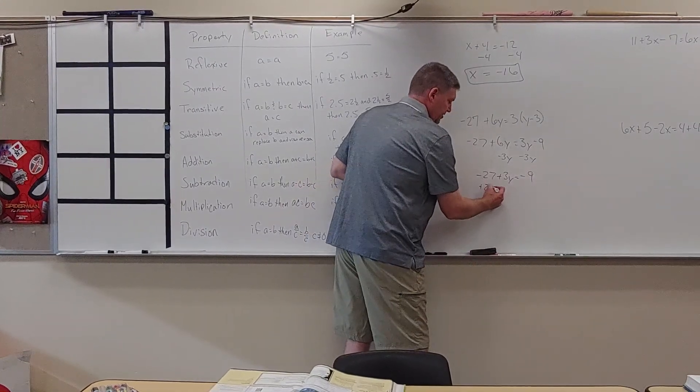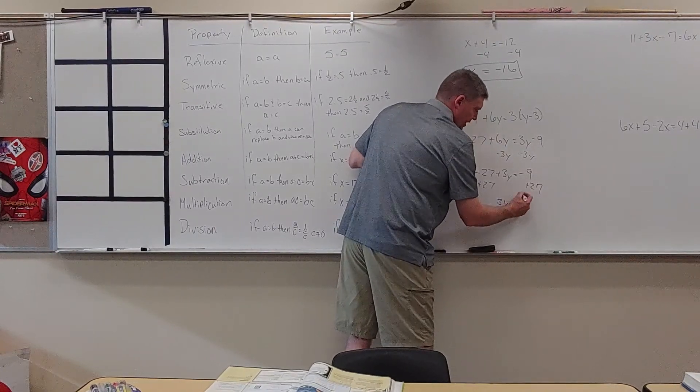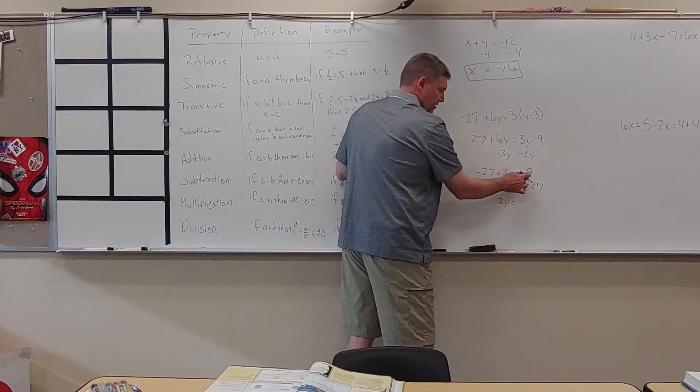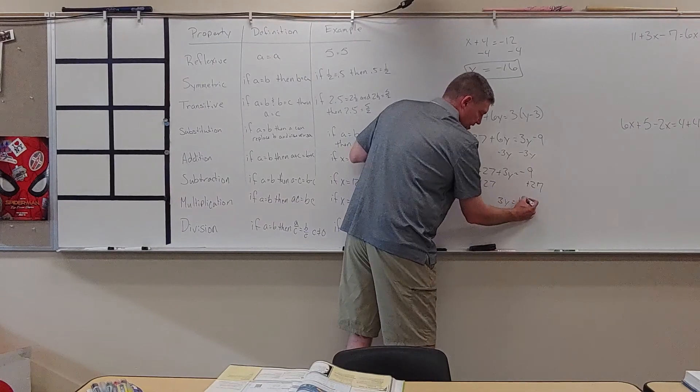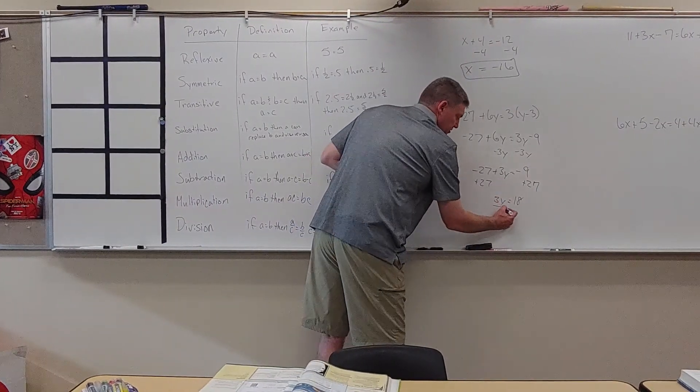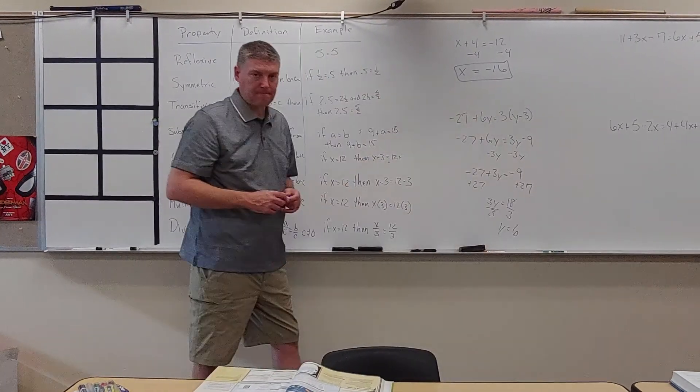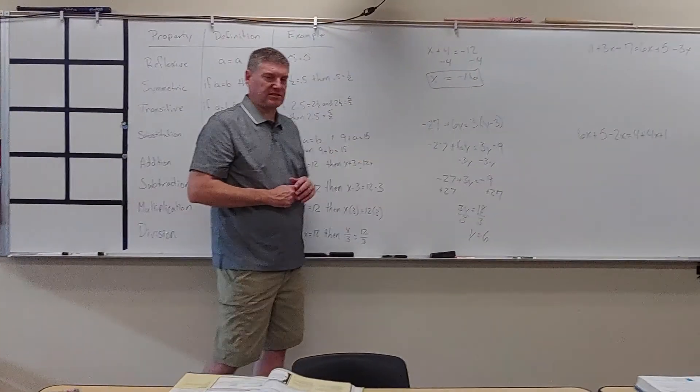3Y equals, well, 27 minus 9 or negative 9 plus 27 is 18. And the last thing I'm going to do is division. I'm going to divide both sides by 3 and get Y equals 6. So that's a multi-step problem.